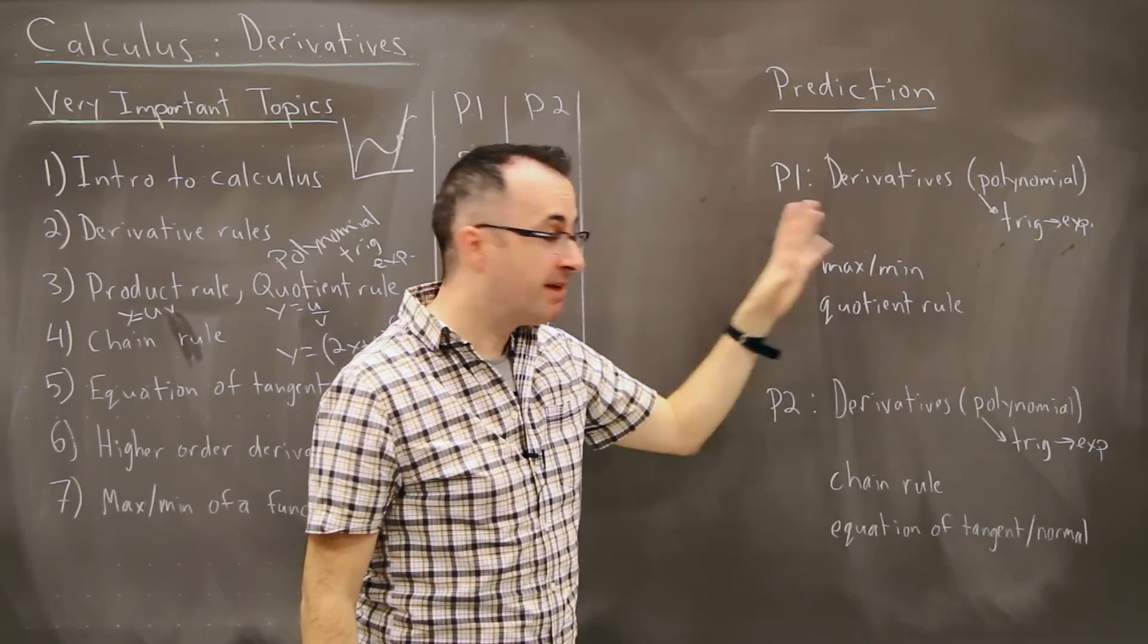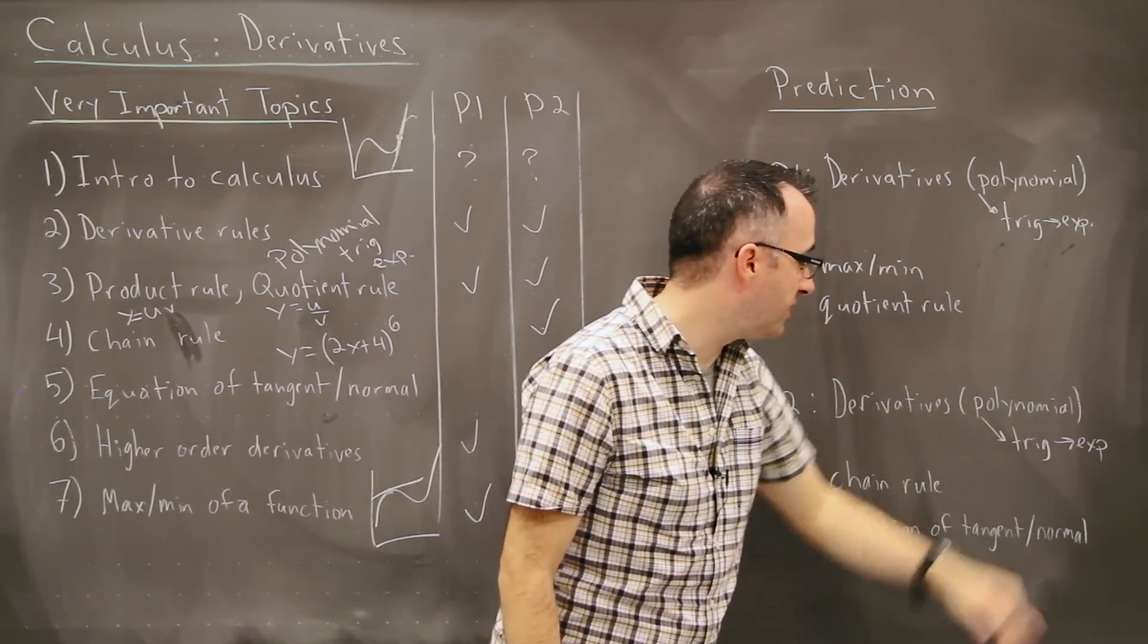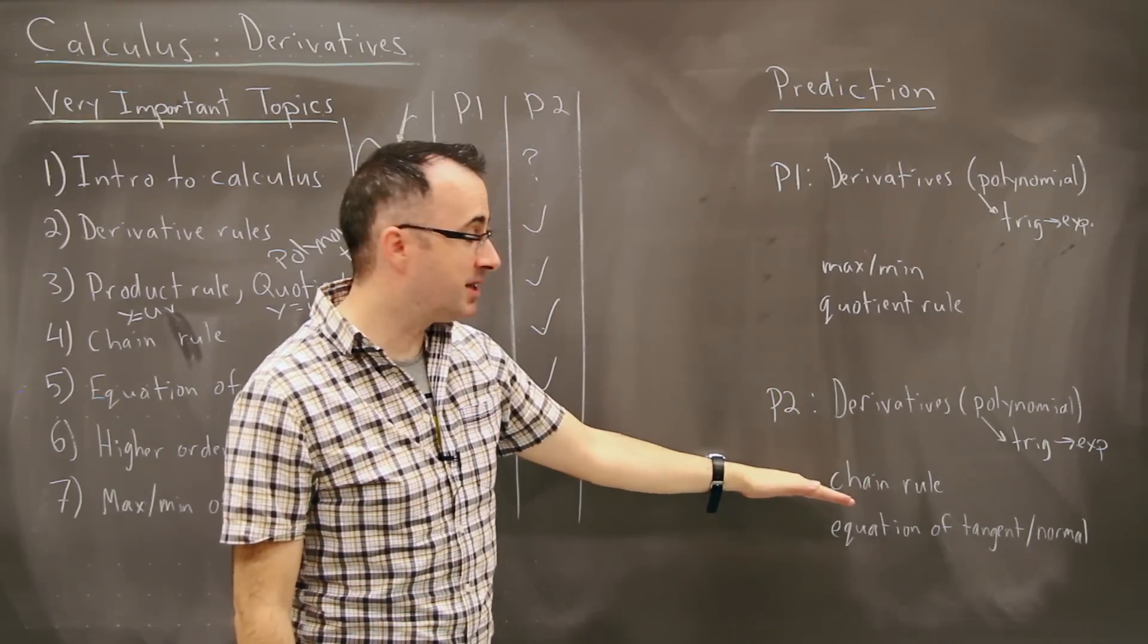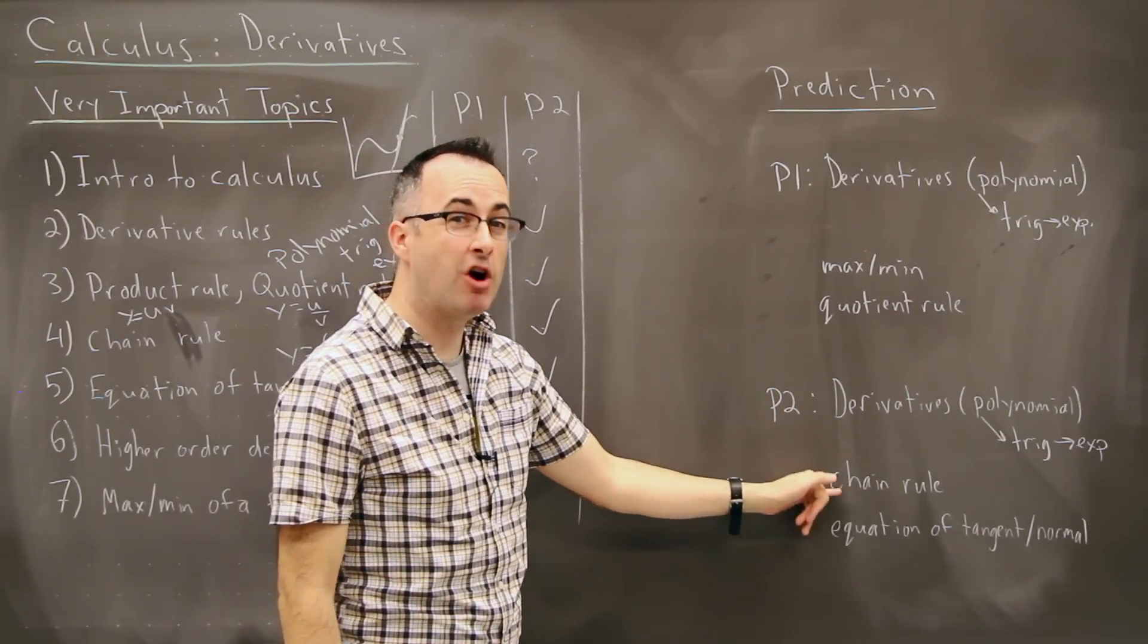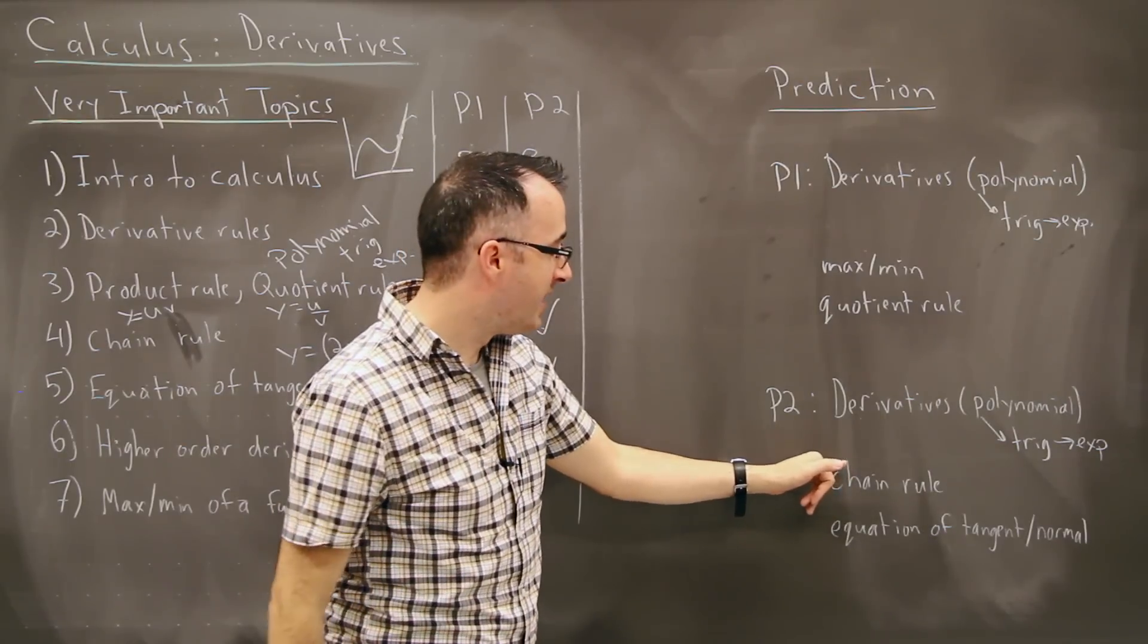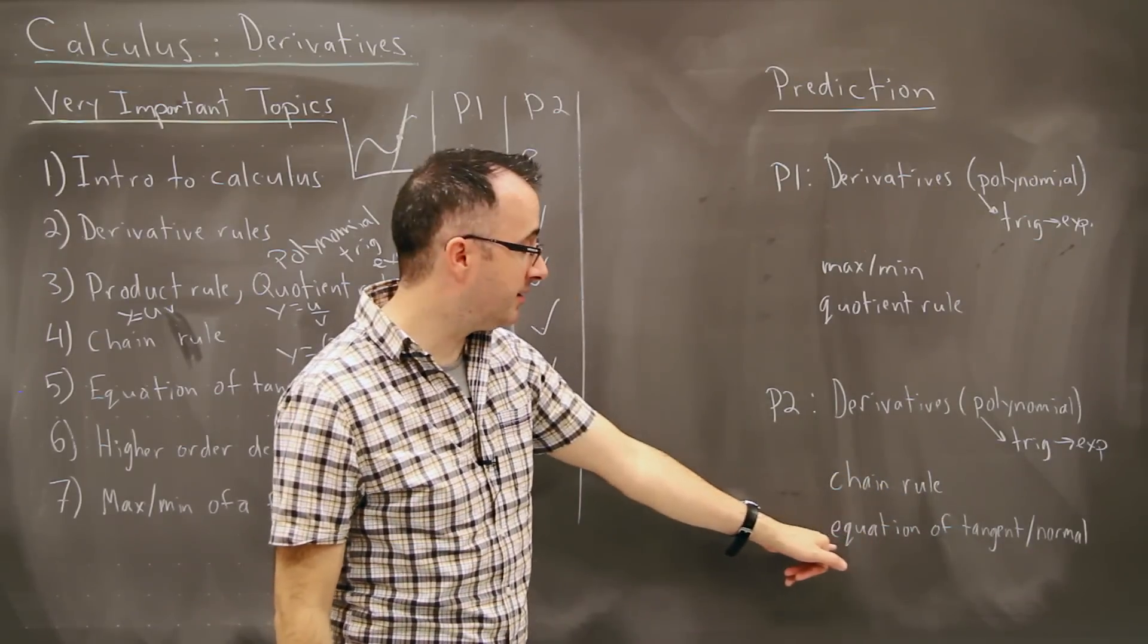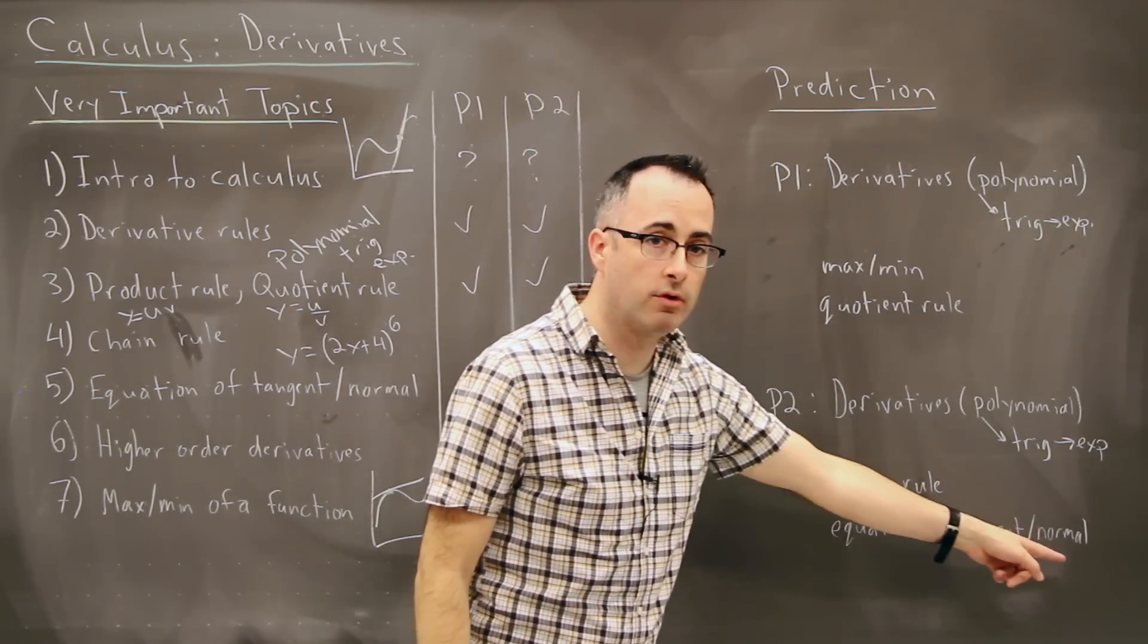For paper two, same idea here. Likely derivatives, same order. Polynomials, then trig, then exponential. But the second most likely thing is chain rule. In other words, a function within a function. That one shows up very often on paper two. And finally, we have the equation of a tangent line or normal. That's going to be very likely. So here you're going to be finding the equation of that line or normal. Normal is when something is perpendicular to the tangent.